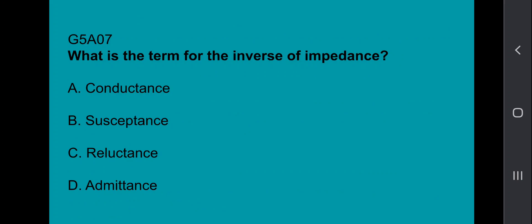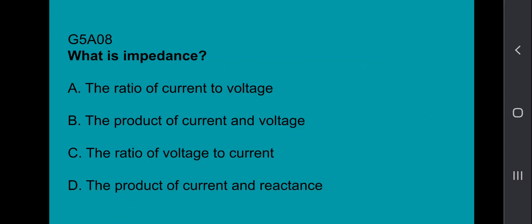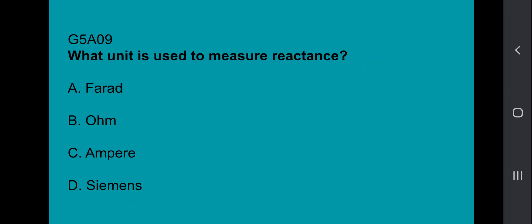G5A07, what is the term for the inverse of impedance? That's going to be admittance. G5A08, what is impedance? Impedance is the ratio of voltage to current. G5A09, what unit is used to measure reactance? That's going to be ohm.